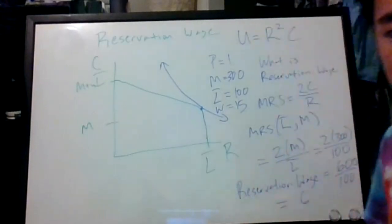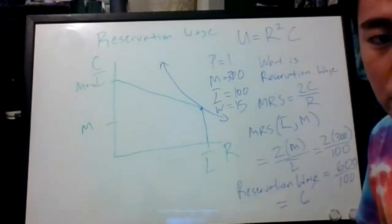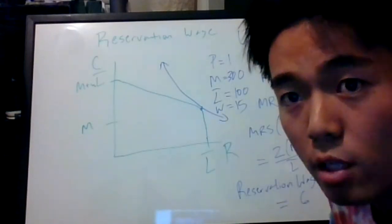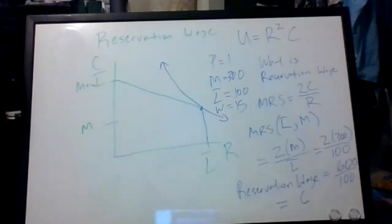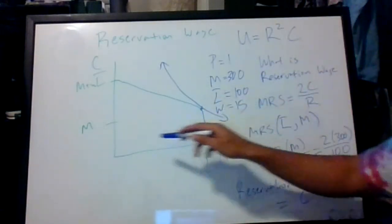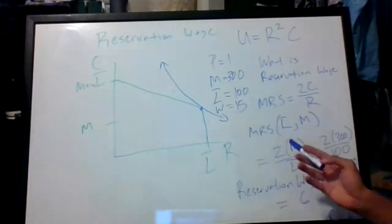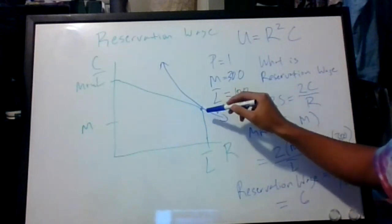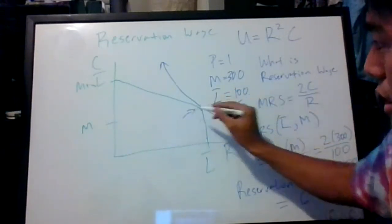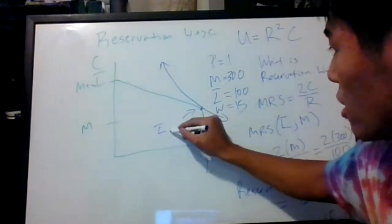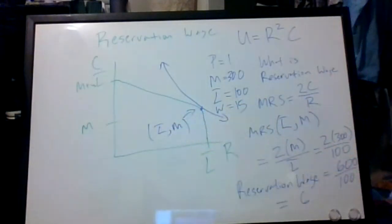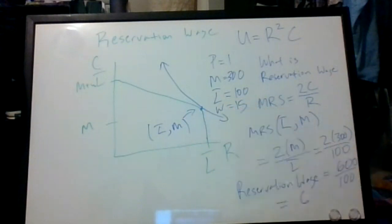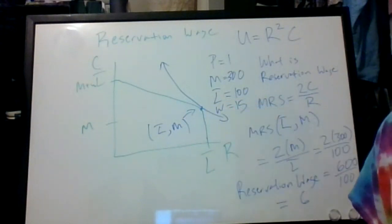To answer Rajveer's question: the reason we replace m and l̄ with c and r is because we want to find the slope at that particular point. If you think about what the coordinates of that point are, it's just (l̄, m), so we want the MRS evaluated there — which is why we plug in those values.